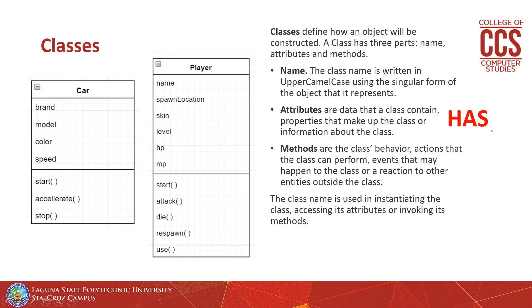Attributes describe a 'has' relationship with the class. So the car has a brand, the car has a model, the car has color, the car has speed. Methods describe a 'can' relationship with the class. So the car can start, the car can accelerate, the car can stop.